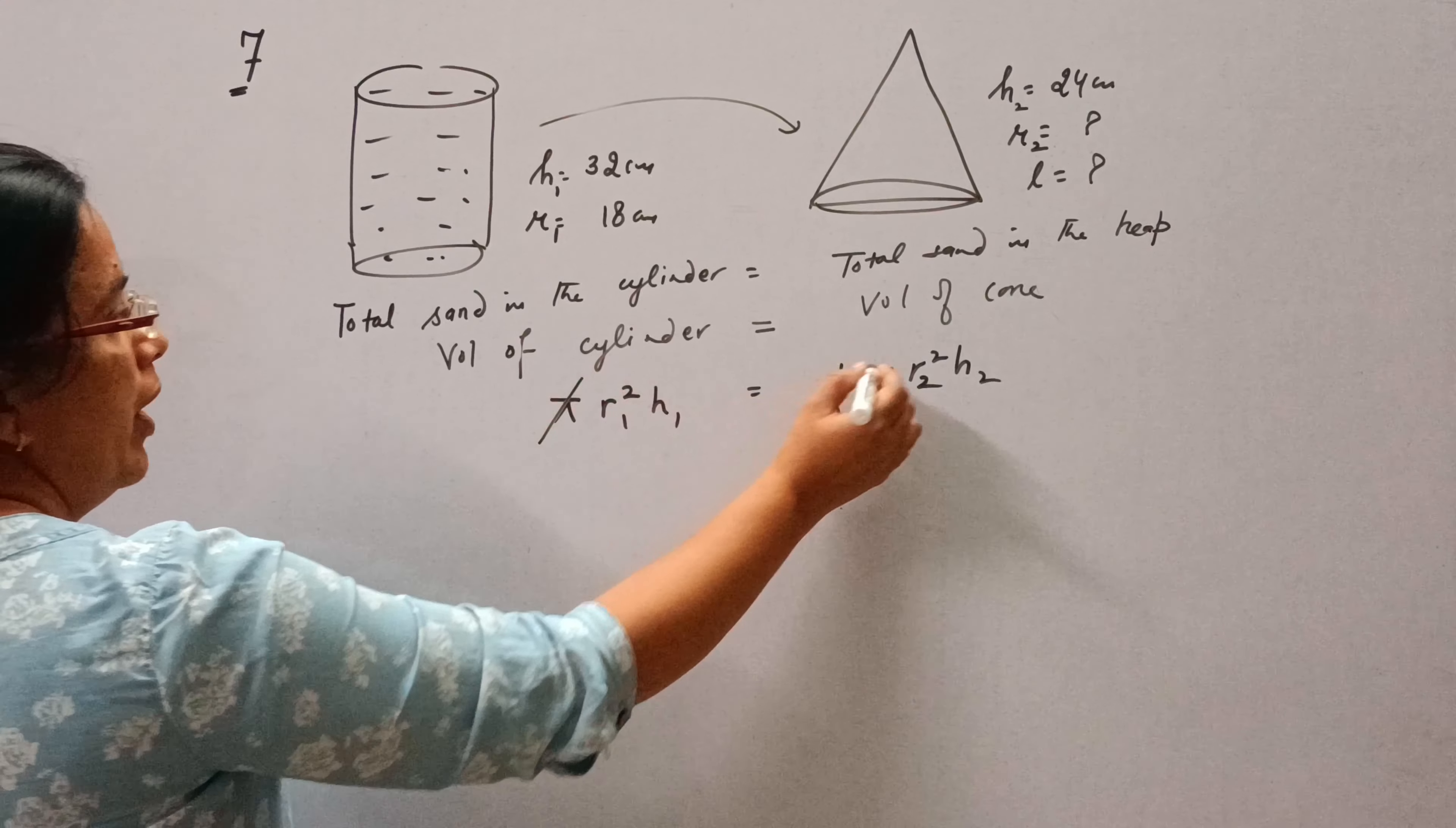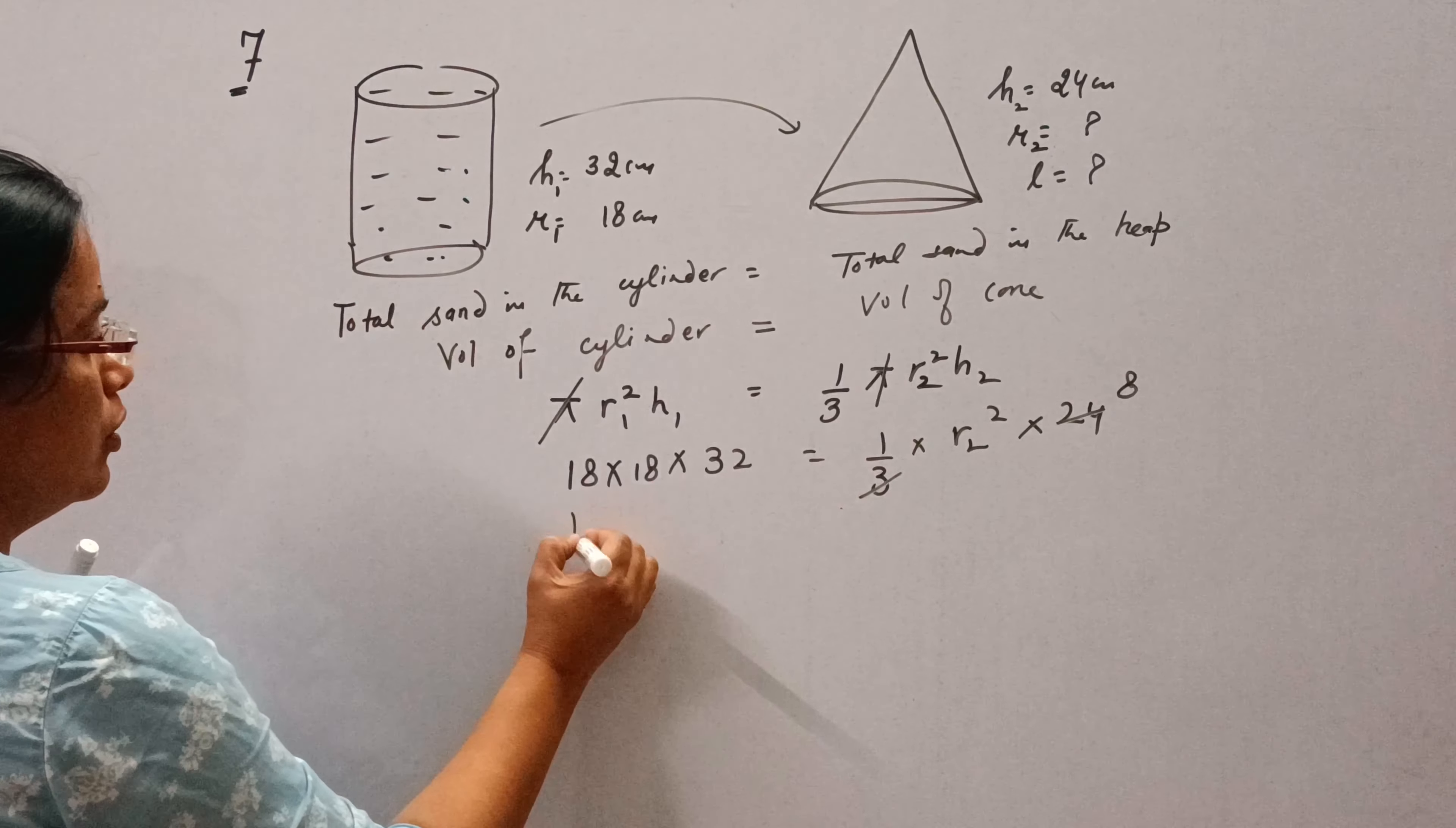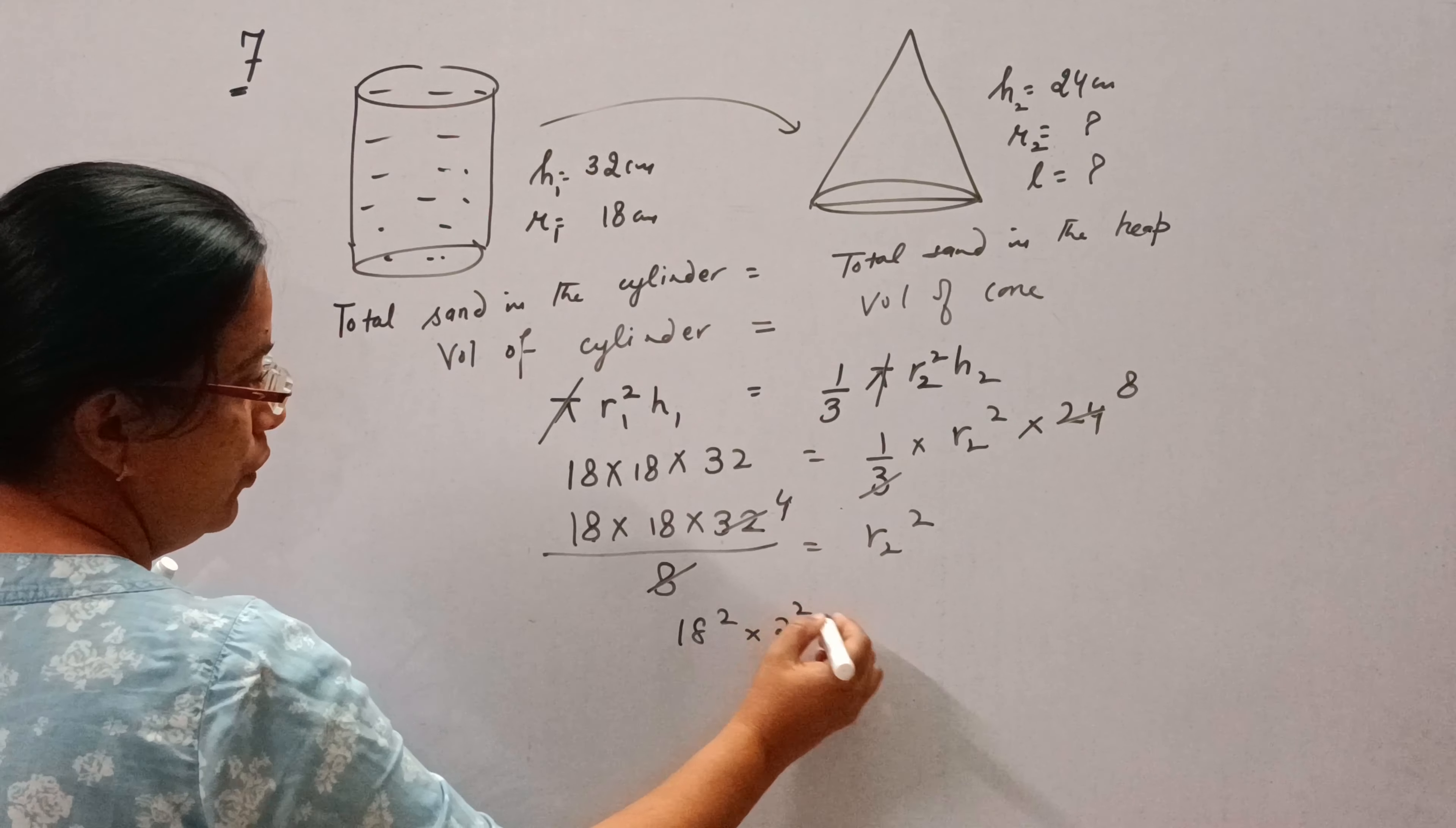We can cut pi by pi. R square means 18 into 18, H1 is 32. R2 we need to find and H2 is 24. So 18 into 18 into 32 upon 8. R2 square. 8 fours are 32.